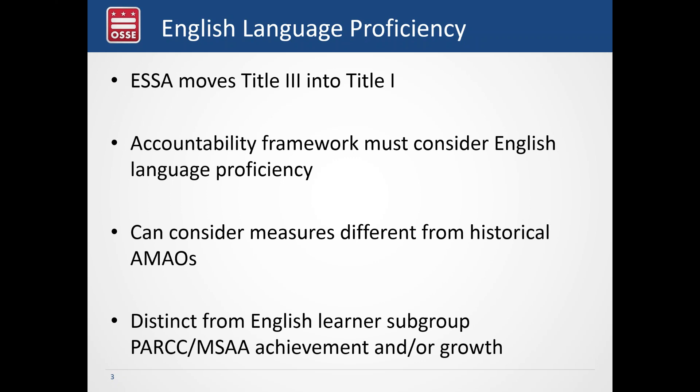As a point of clarification, when we talk about the English language proficiency domain required in our accountability system, that's distinct from thinking about the English learner subgroup within our academic achievement and growth measures. The EL subgroup measure looks at how those students perform on PARCC or our alternate assessment MSAA. In this case we're talking specifically about how students are doing on our English language proficiency assessment, which in DC is the ACCESS assessment.